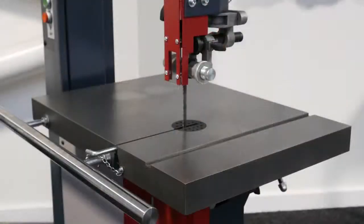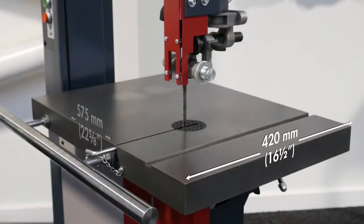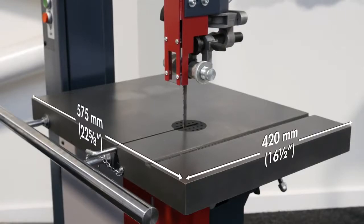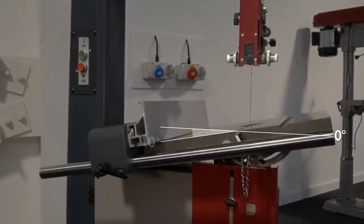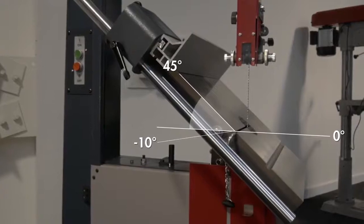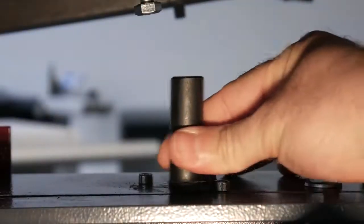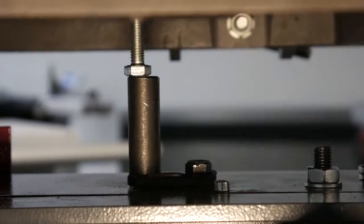The solid cast iron table measures 420 x 575mm and can be angled from minus 10 to 45 degrees. The exact 0 degree position of the table is guaranteed by a fine adjustable stop.